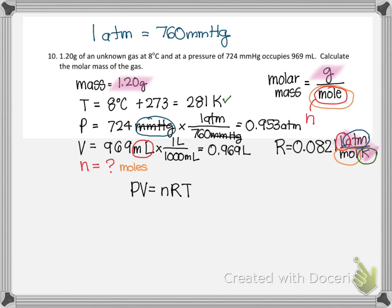So let's look here. So P is 0.953 times volume, which is 0.969. That's the left-hand side. N is what I'm looking for, and I'm multiplying that by 0.0821, crazy units, and T, 281 Kelvin.